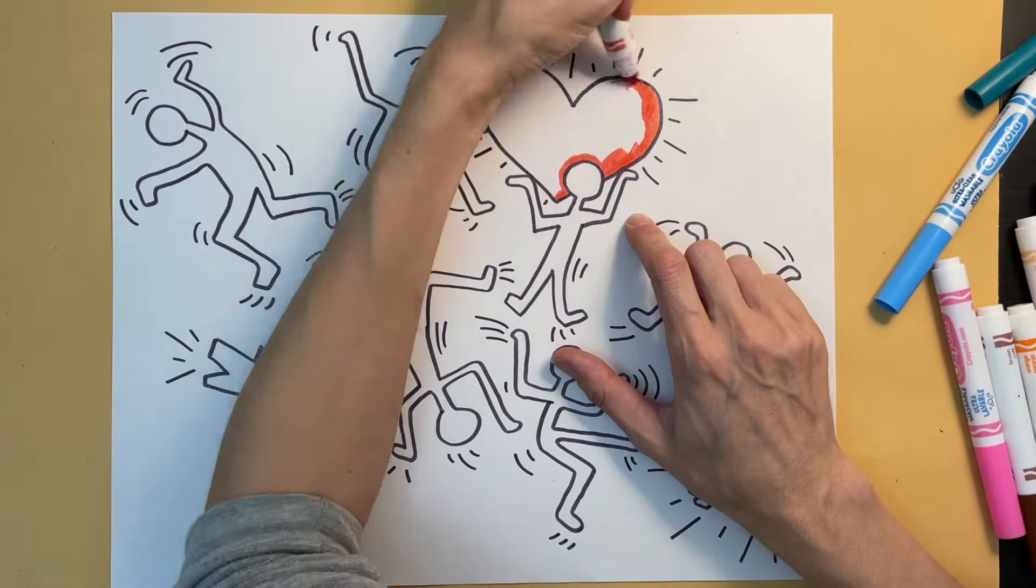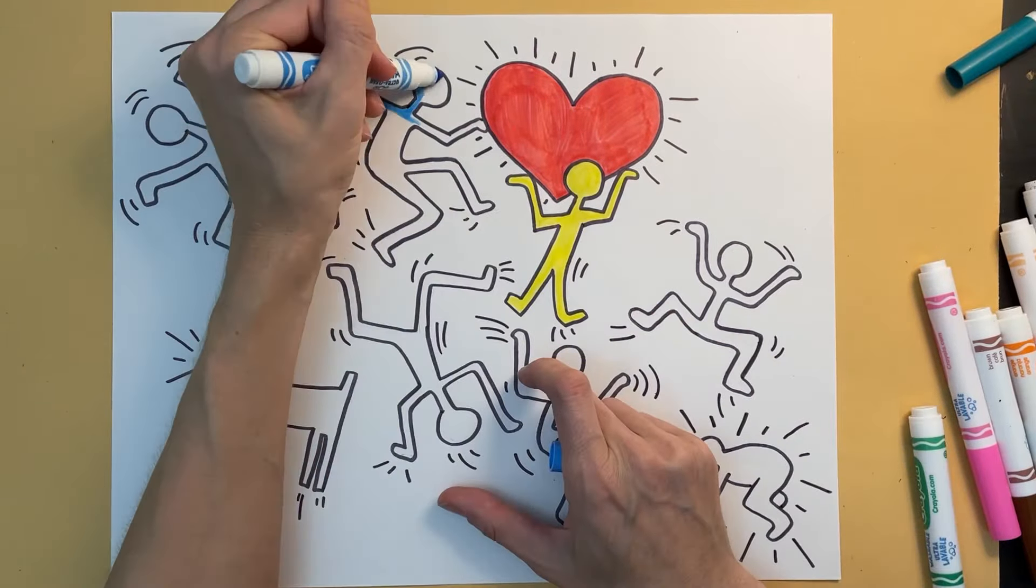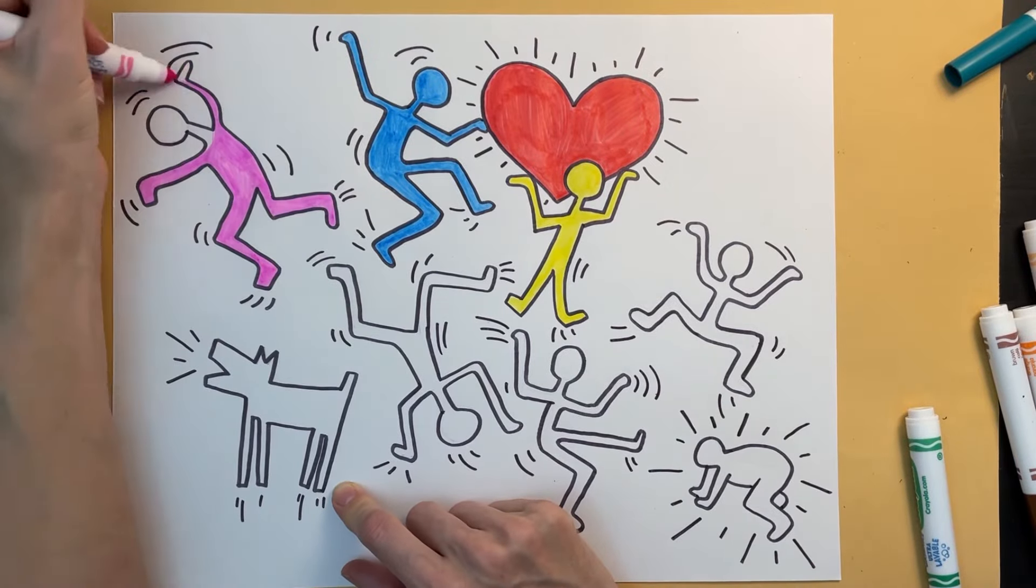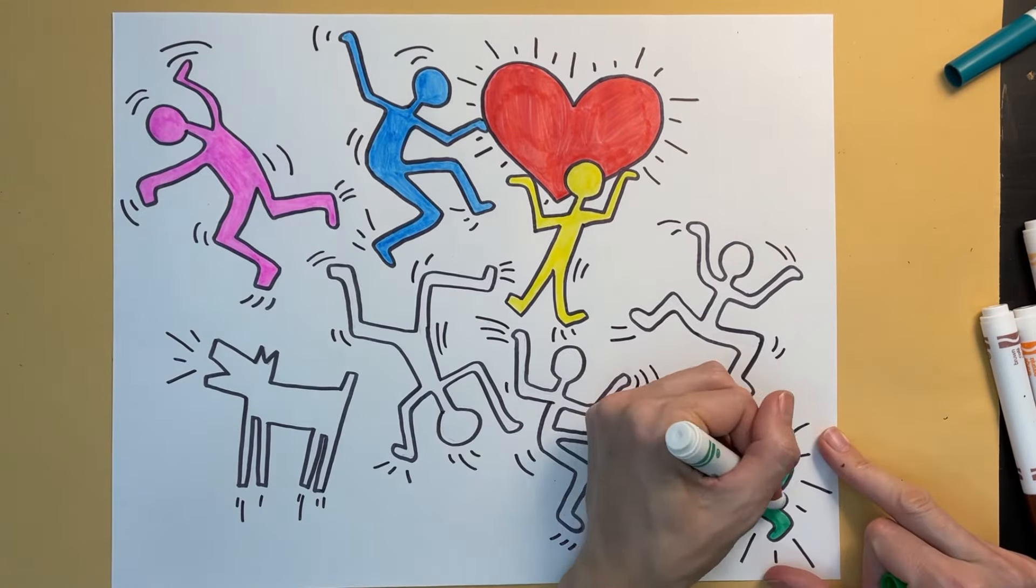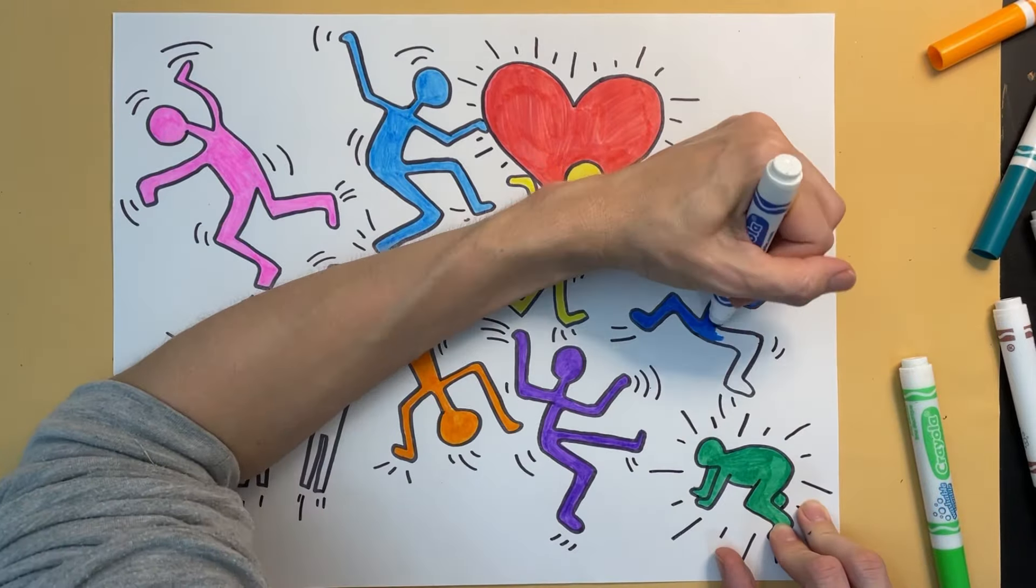Now that I'm all done drawing and outlining I'm going to fill in my figures with solid colors using Crayola markers. You could also use crayons colored pencils or paint but I think markers look really good because they are so bold and bright.